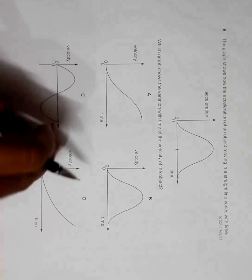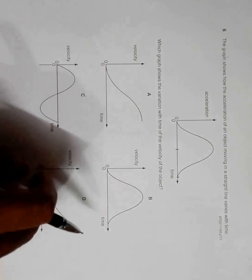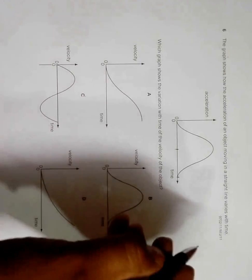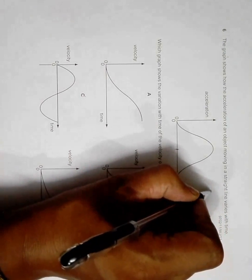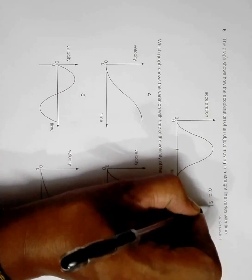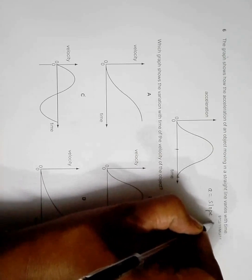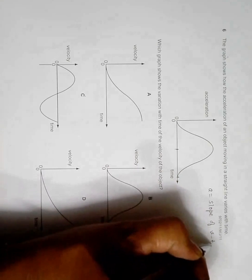We have been given four graphs of velocities, so we have to match any of these with this. Let's remember that a equals slope of VT graph.